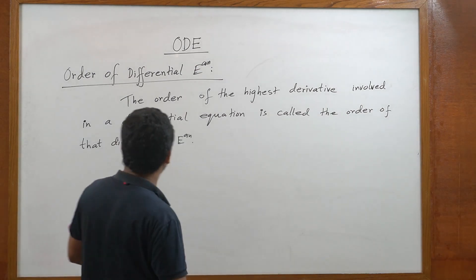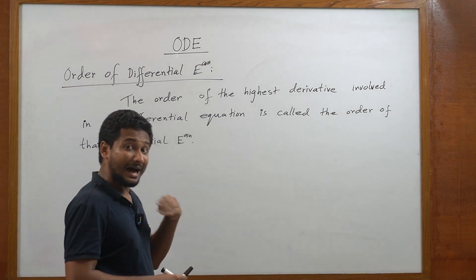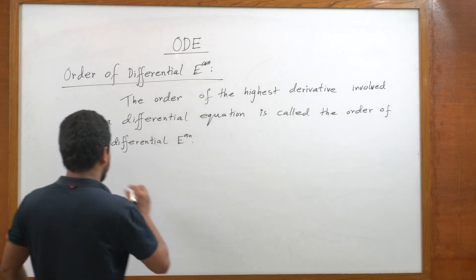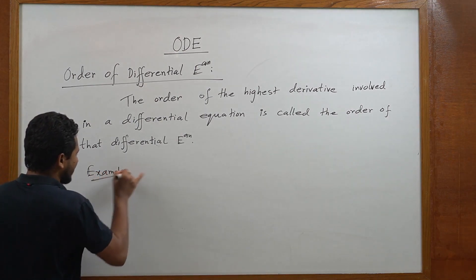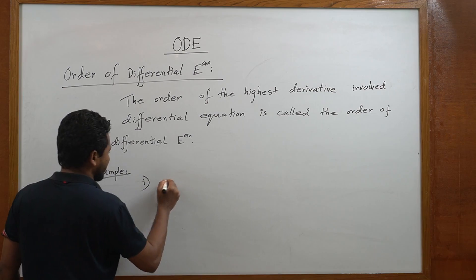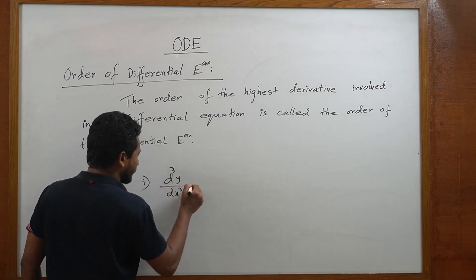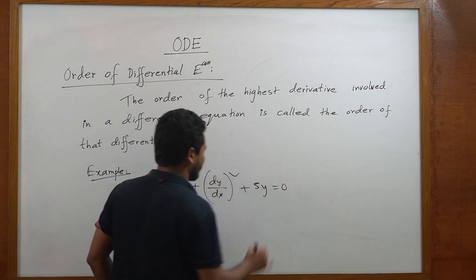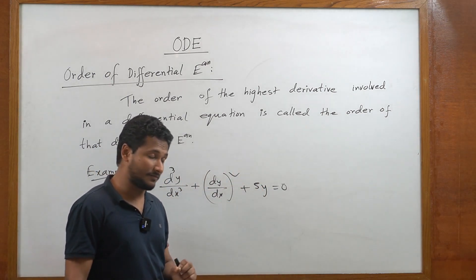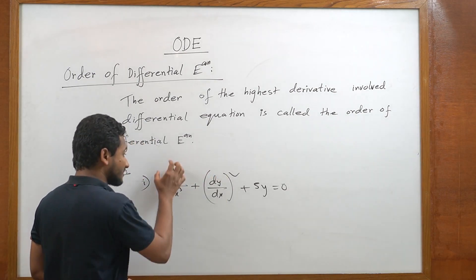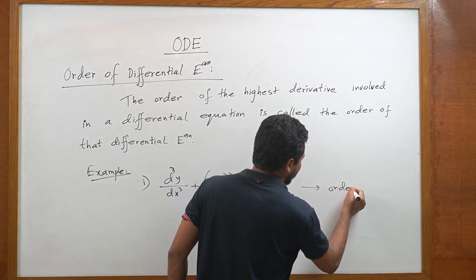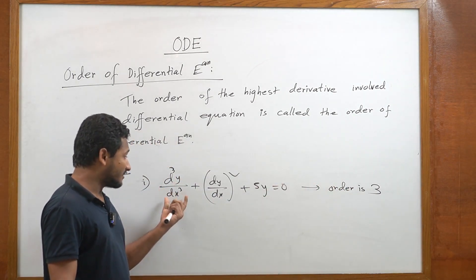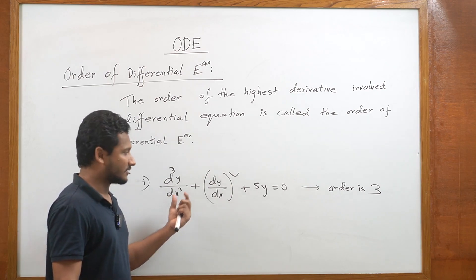The shortcut idea of order: it is the highest order derivative present in the differential equation. First example: d³y/dx³ + (dy/dx)² + 5y = 0. In this equation, we have a first derivative and a third derivative. The highest derivative is the third derivative, so the order is 3.